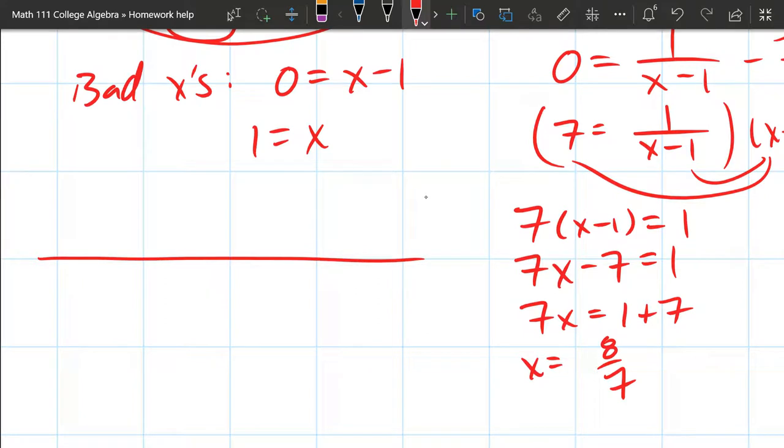So these are the bad x values. So I got one. Eight sevenths is seven sevenths plus one seventh. So if that's one, it's a little bit bigger. That'll be eight sevenths. So those are all the bad x values. Now we'll talk about the good ones.